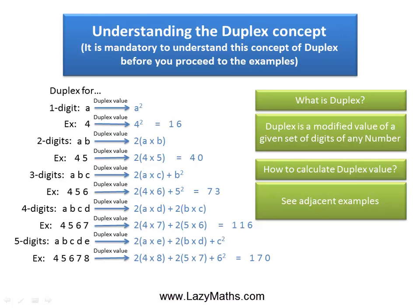With this, you basically get the idea of how duplex value is calculated for different digits. As I said earlier, you need to know this concept very well for you to understand how to square any number with any number of digits using speed math shortcut. Thank you.